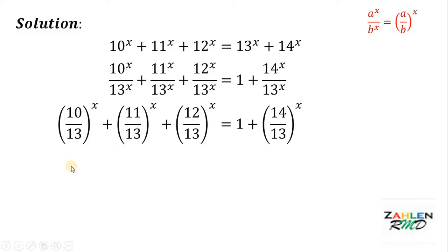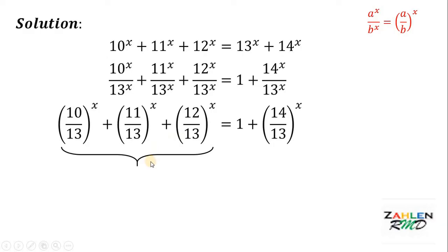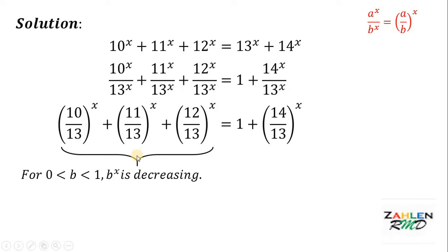Now let the left-hand side be equal to f(x) and the right-hand side be equal to g(x). Now let's first consider the left-hand side. 10/13 is definitely between 0 and 1; 11/13 is between 0 and 1 also; and 12/13 is definitely between 0 and 1. Now for all b that is greater than 0 but less than 1, b raised to x is decreasing. Therefore, the left-hand side is a decreasing function.